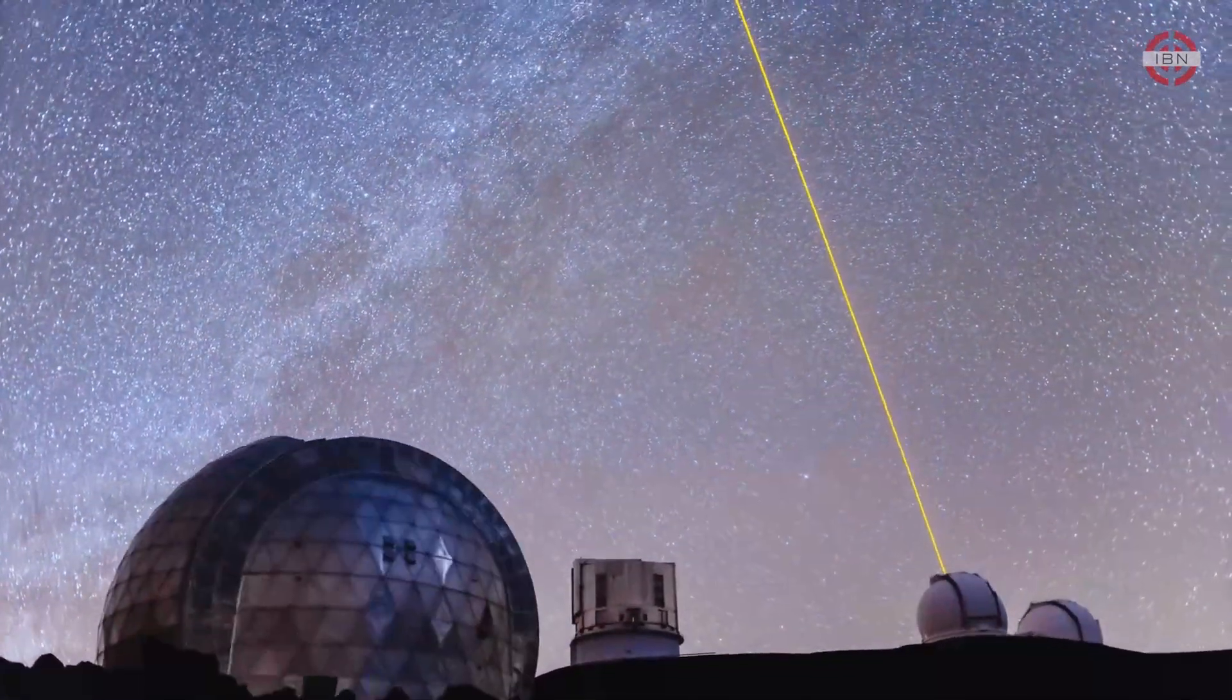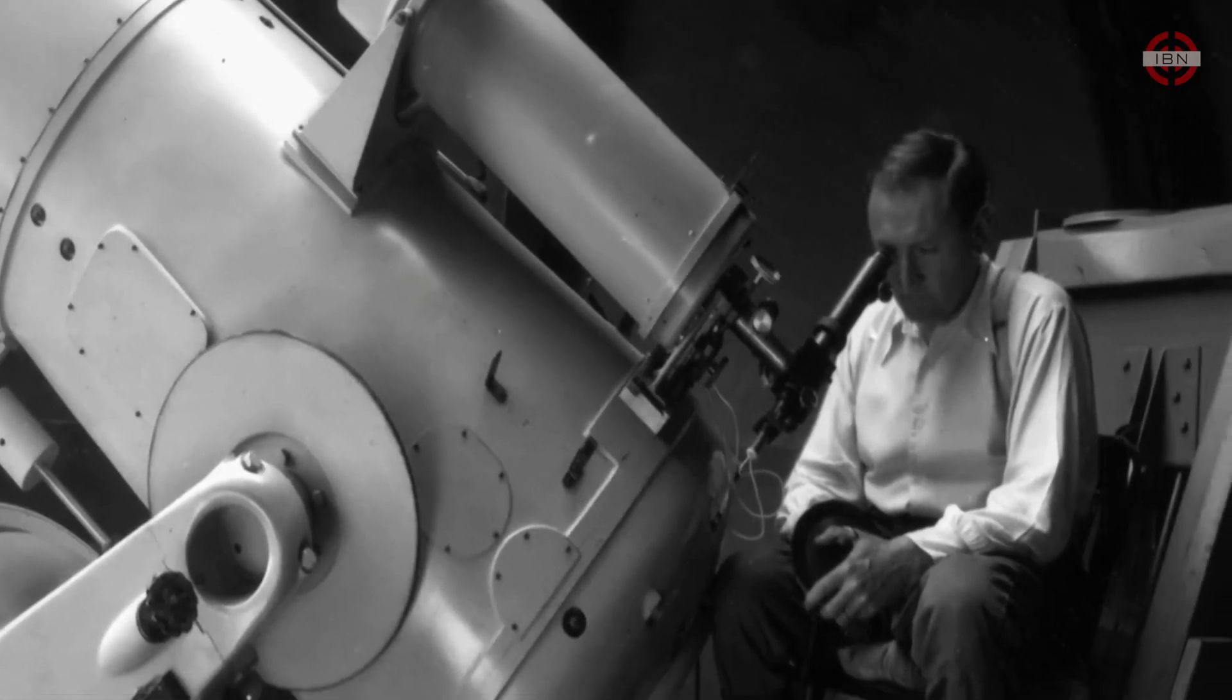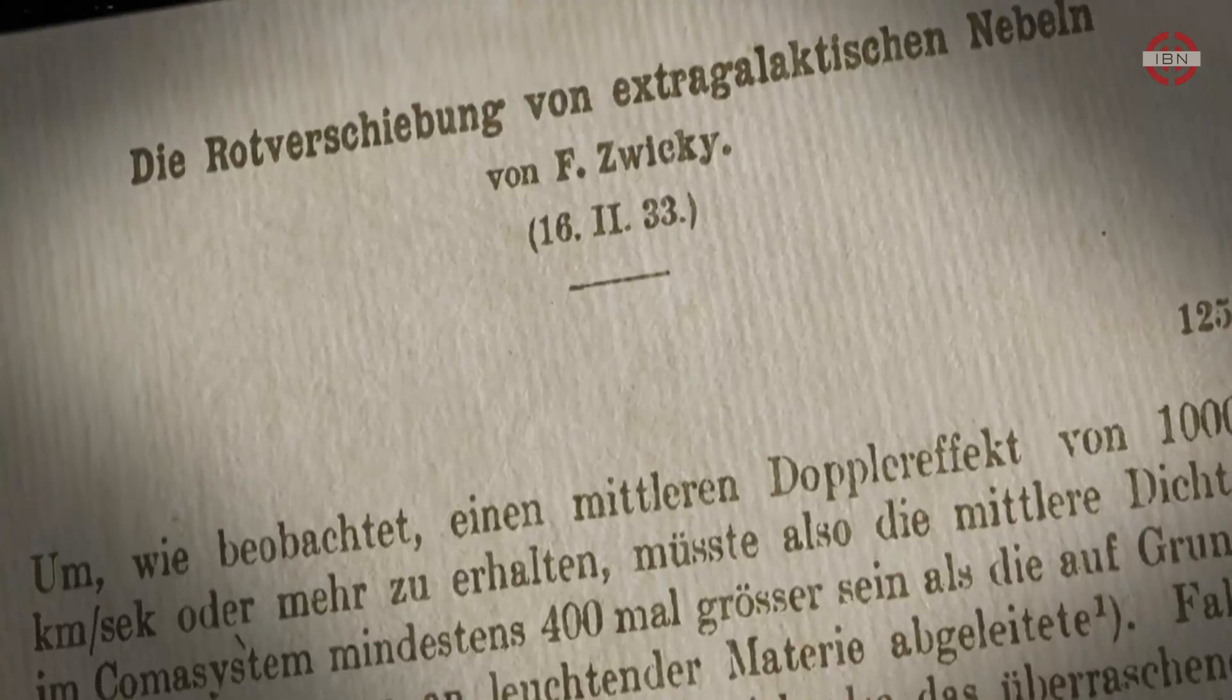In the early 20th century, astronomers like Vera Rubin and Fritz Zwicky noticed something strange. Galaxies were rotating in ways that couldn't be explained by visible matter alone. This hinted at a mysterious unseen force.